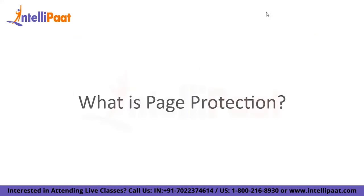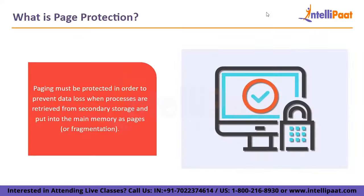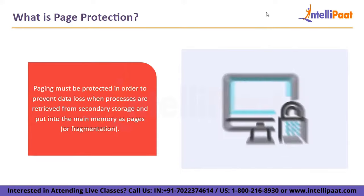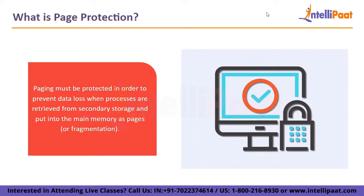Page protection is needed to prevent data loss when processes are retrieved from secondary storage and placed into main memory as pages, or due to fragmentation. To guard against data loss, an extra bit called a valid or invalid bit is added with each page. Additionally, a few bits known as protection bits are linked with each entry in the page table to specify protection on the associated pages.